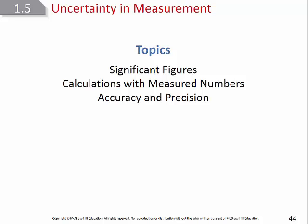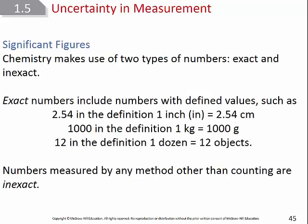Moving on to significant figures: significant figures and knowing where to round. First, let's talk about exact versus inexact numbers. An exact number is one with no error — no limit to its significant figures. Exact numbers come from defined values, such as one inch being defined as 2.54 centimeters. The number 2.54 is exact. Prefix definitions like 'kilo equals 1,000' also yield exact numbers.